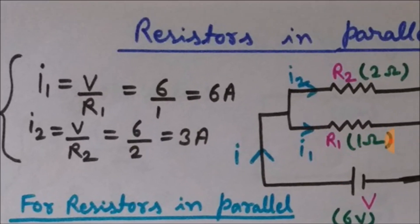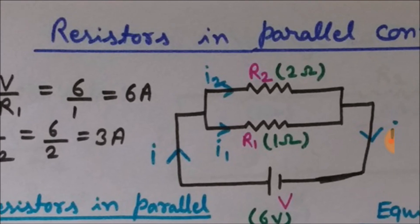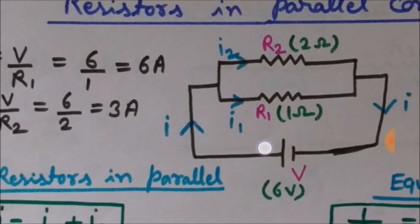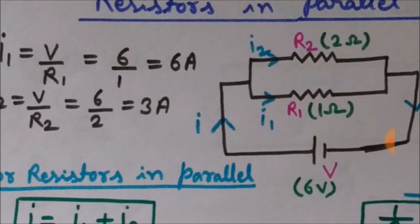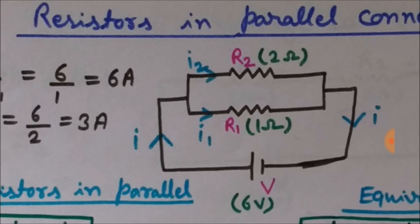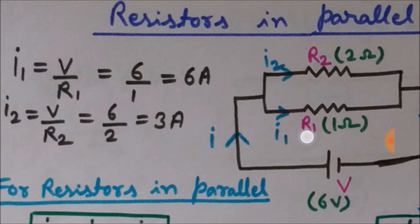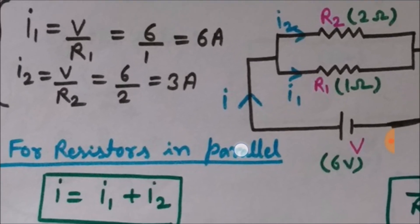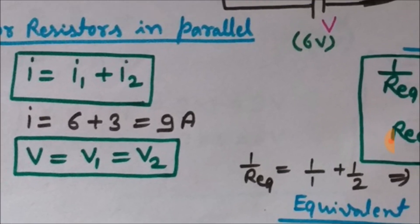Using Ohm's law, V = IR, so I = V/R. The current through R1 is i1 = V/R1 = 6/1 = six amperes. Similarly, the voltage across R2 is six volts and its resistance is two ohms, so i2 = 6/2 = three amperes. The total current is six plus three equals nine amperes, and the voltages across both resistors are equal to the battery voltage of six volts.